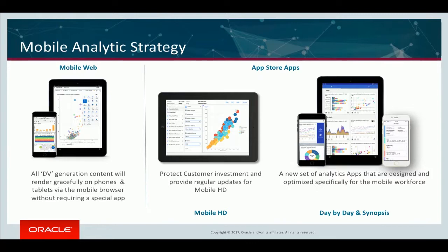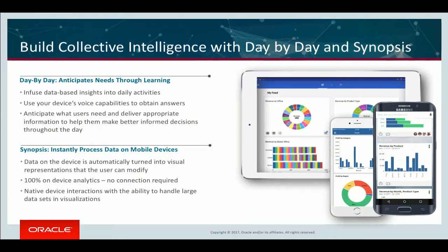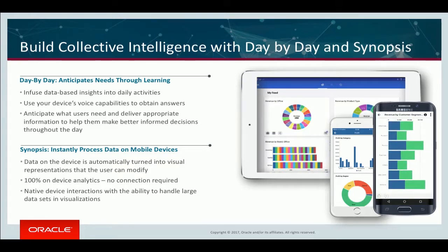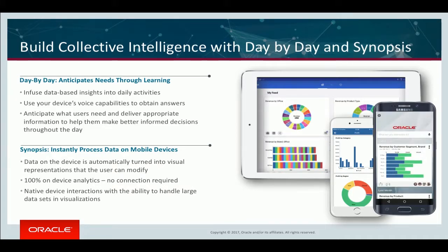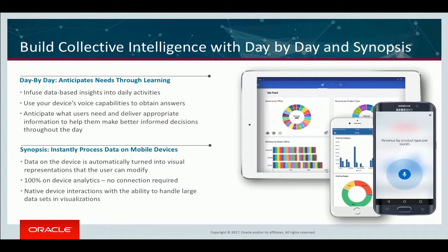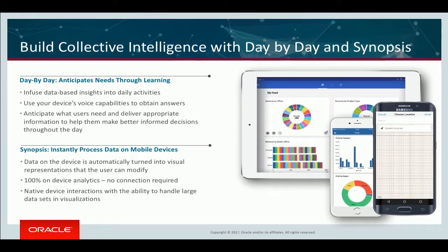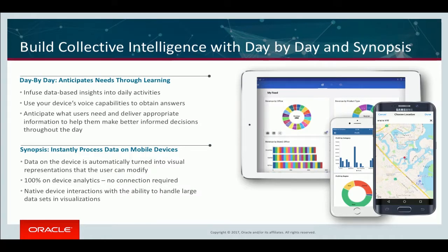Then we introduced two new mobile apps called Day by Day and Synopsys. We took a step back, looked at the market, what people do on mobile devices and what competitors do, and thought everyone's doing analytics on mobile wrong. The model kept going with 'build a report, put it on a phone, let someone consume it' — taking that report built on a 24-inch monitor and trying to adapt it to the screen. We started looking at apps like Twitter, Facebook, Snapchat, and even Tinder, looking at the use cases and metaphors they use to drive analytics on a mobile device for consumer-class users.